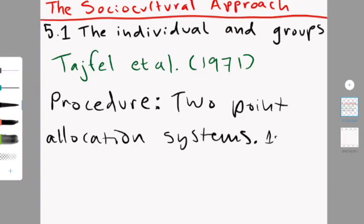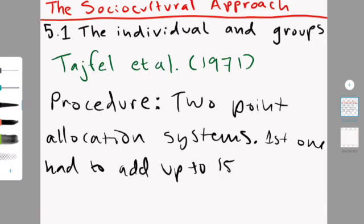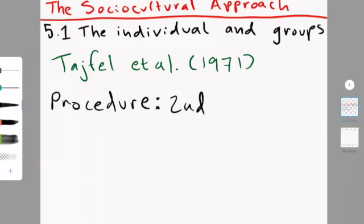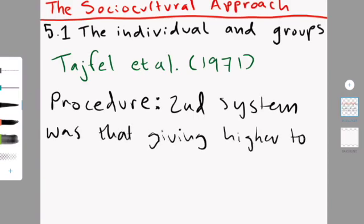The other system of rewarding points was essentially that the higher points you gave to your own group would give more profit to your out-group. So essentially if you gave lower numbers to the people in your in-group, the other group would get lower scores as well.